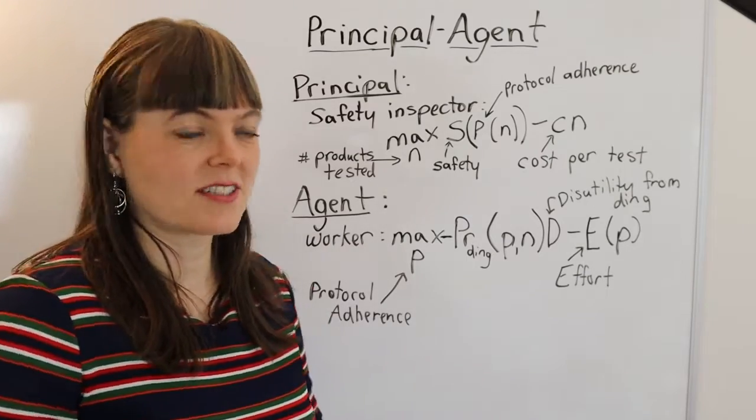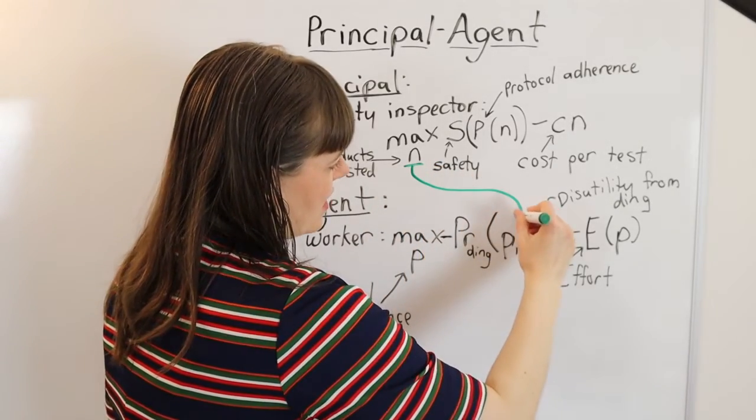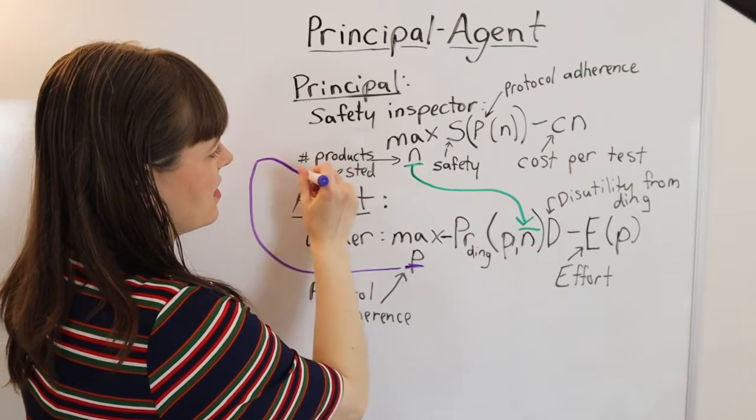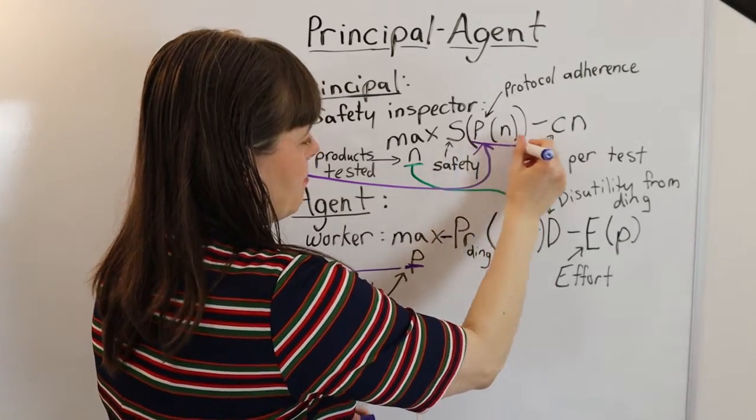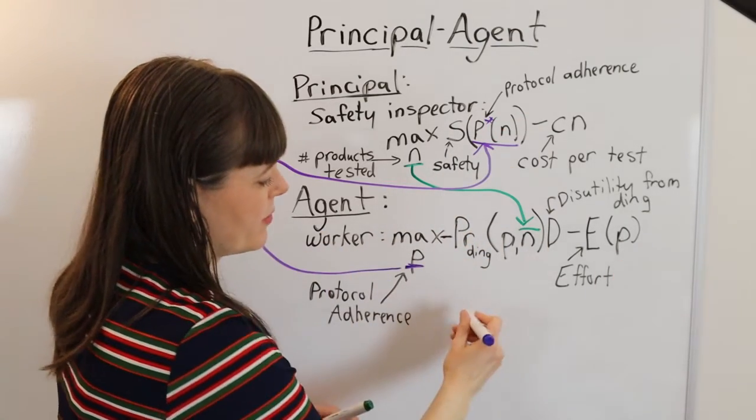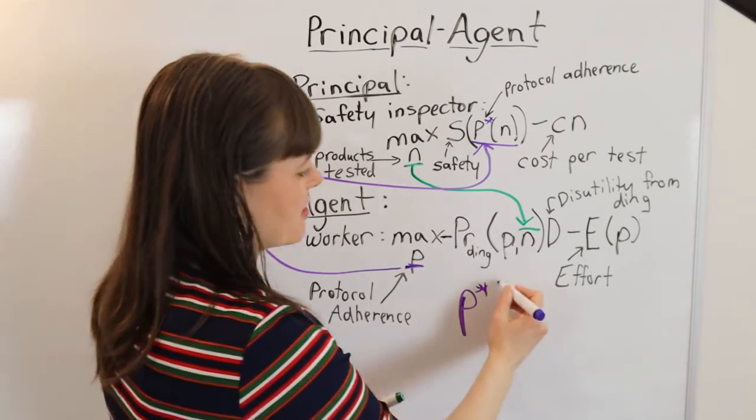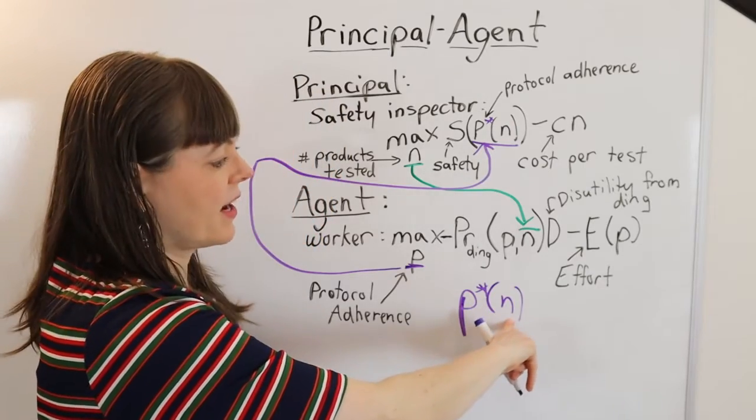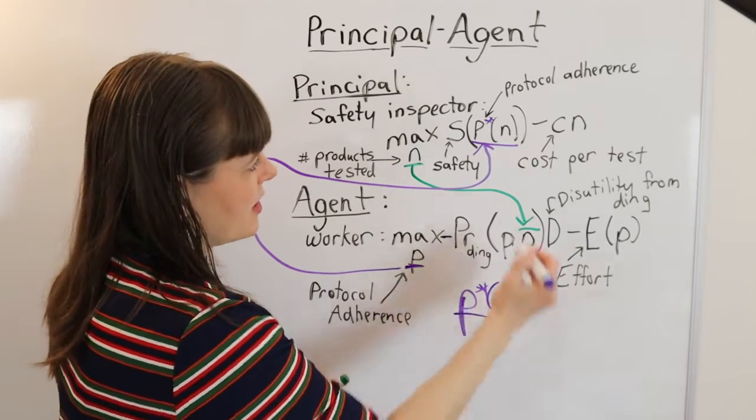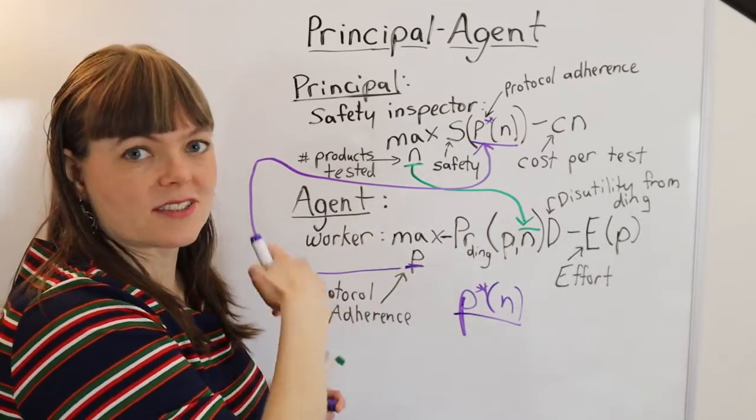And you can see that this actually matches the same traits where we have the choice variable for the principal is exogenous in the agent's model. And then the choice variable for the agent is endogenous in the principal's model, meaning that this protocol adherence is the solution to the agent's problem. The solution here is the agent decides what is your optimal amount of protocol adherence as a function of the frequency of getting your products tested, where you could be discovered if those products don't turn out well. And this appears in this function up here exactly as it is. As a matter of fact, this function is derived from the agent's optimization problem.